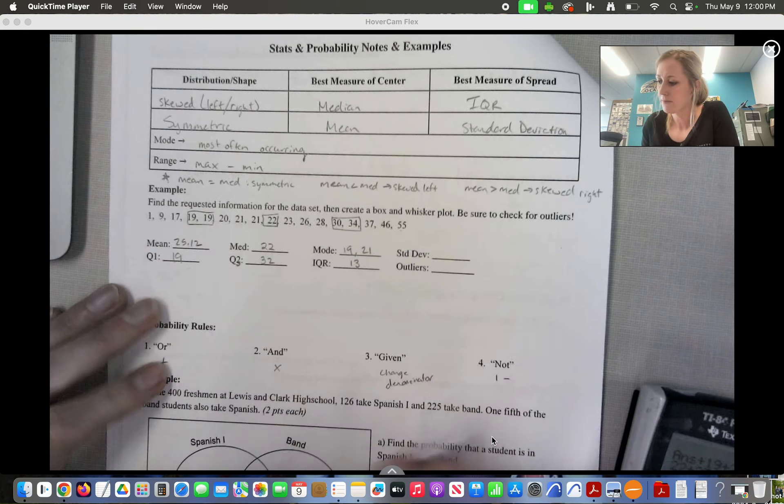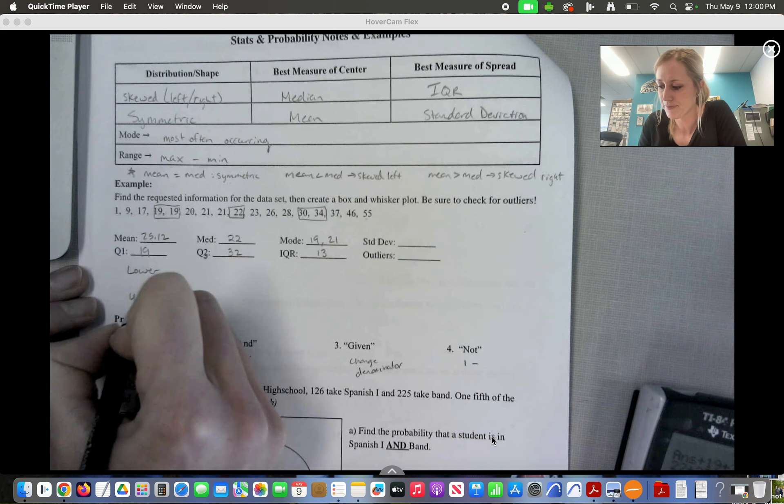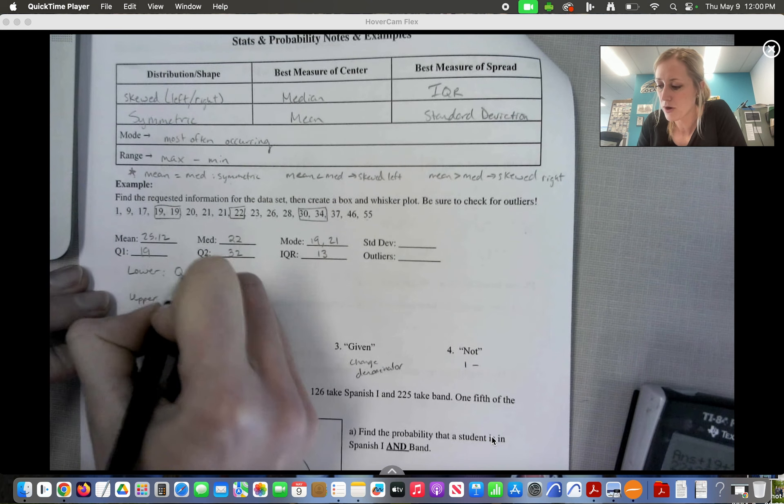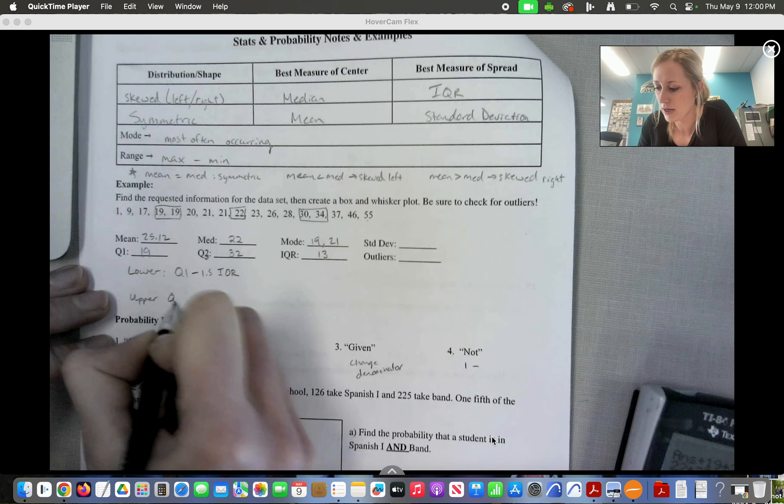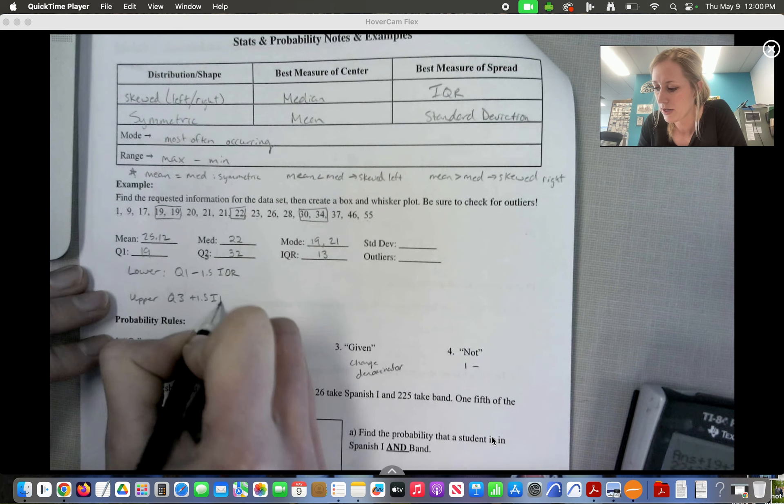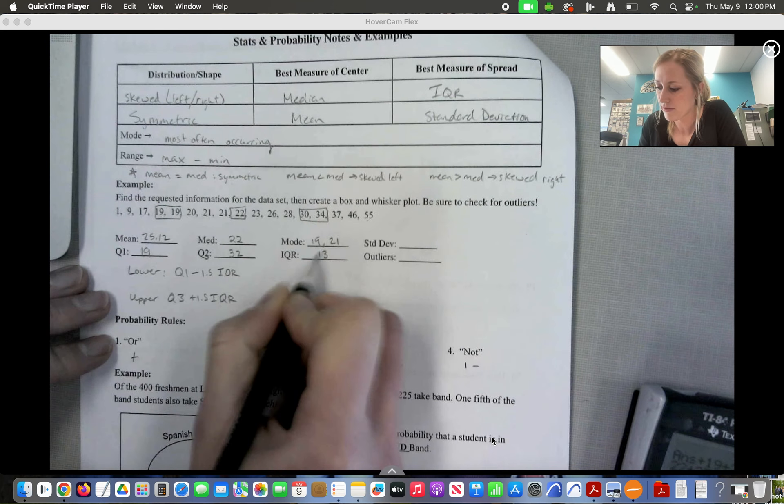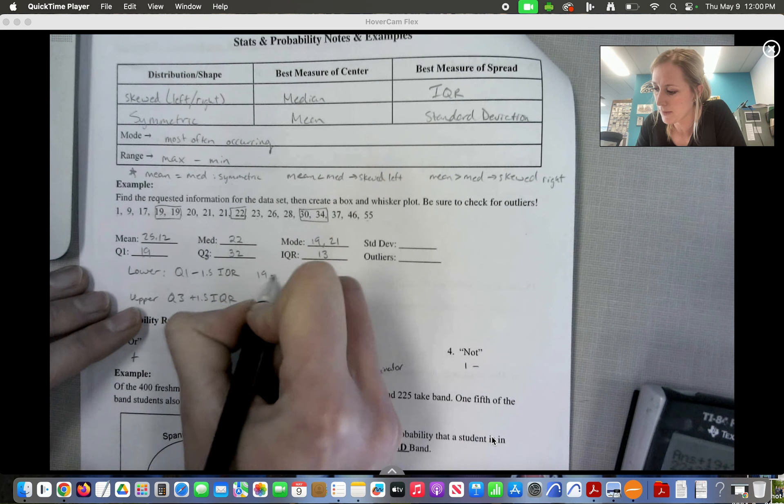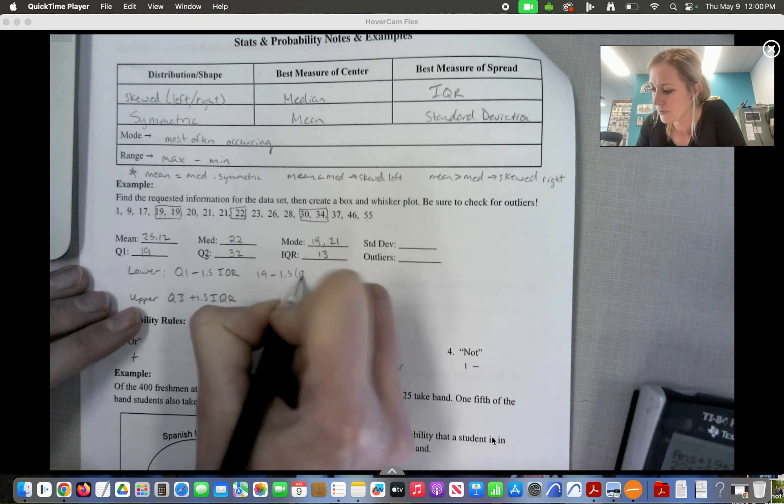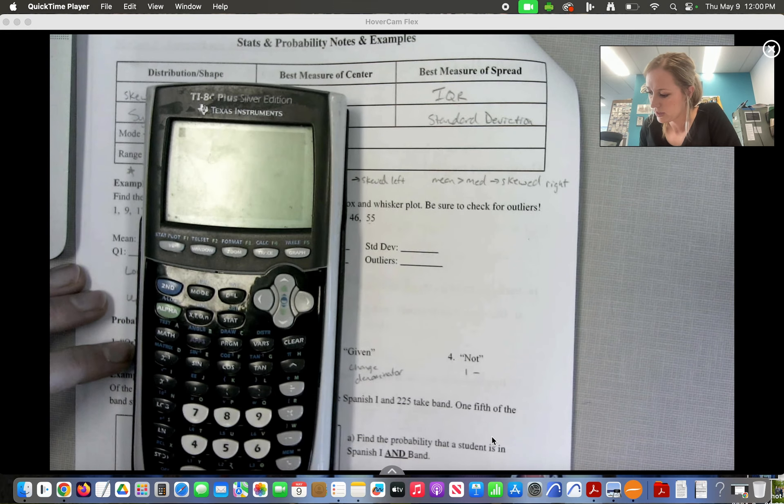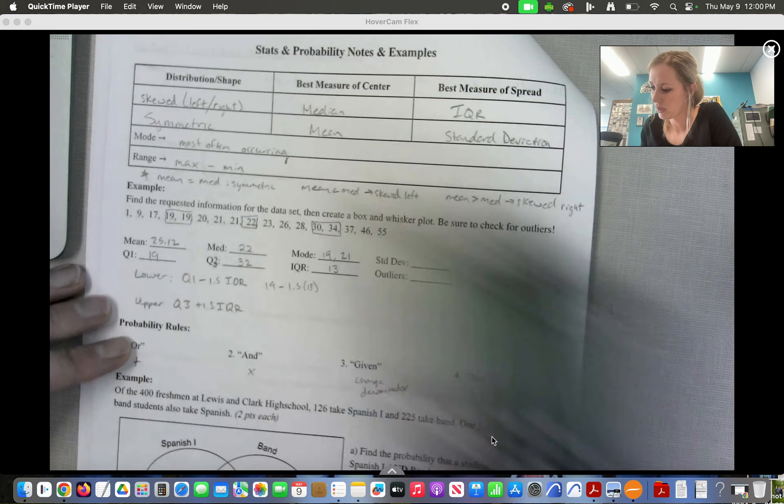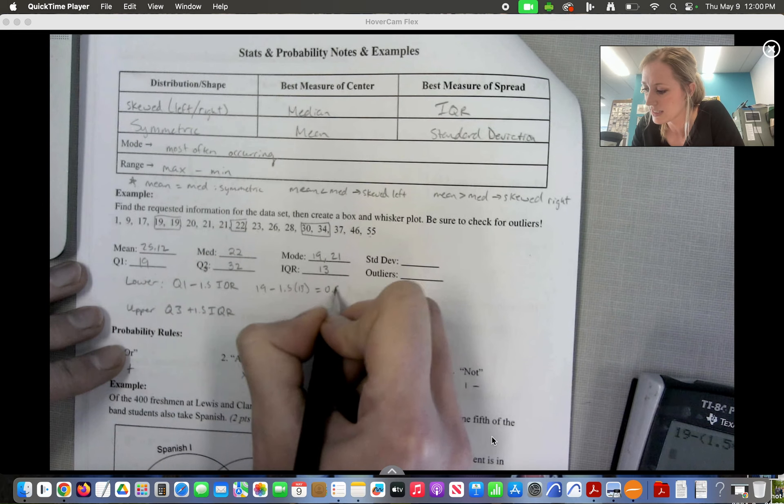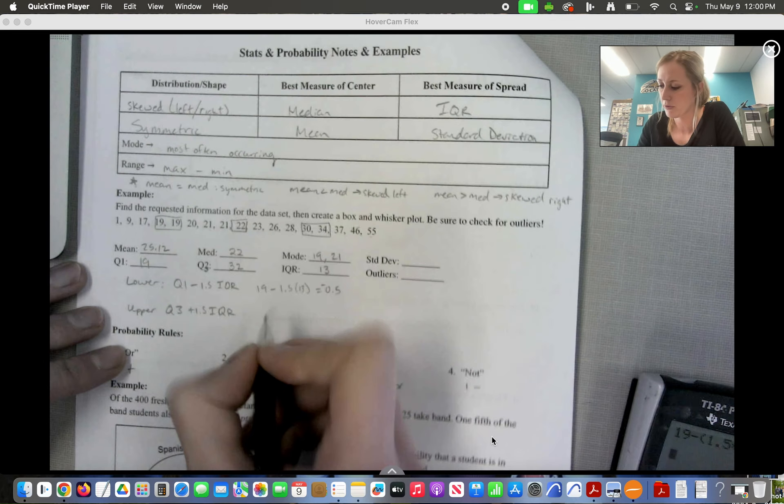All right, outliers. Remember, this is where I got to find the lower and upper fence. So remember, that is Q1 minus 1.5 of the IQR and Q3 plus 1.5 of the IQR. IQR we already have is 13. So for this one we're going to do 19 minus 1.5 times 13. If I do that, 19 minus 1.5 times 13, and we get negative 0.5. So I don't have any numbers less than negative 0.5, so no outliers on the lower end.